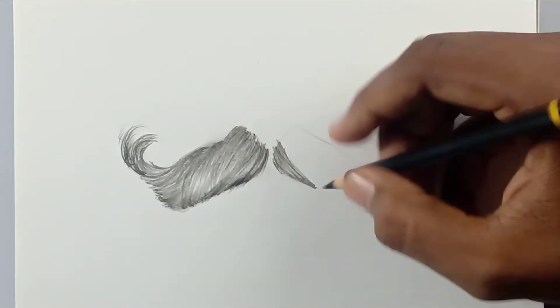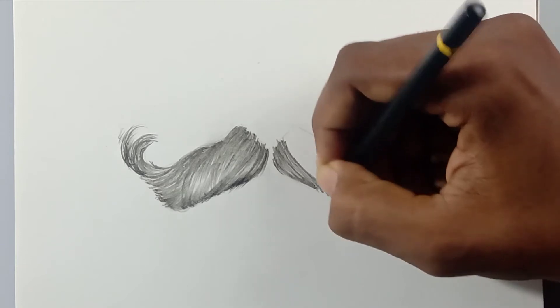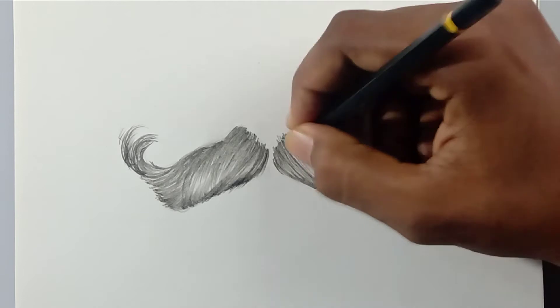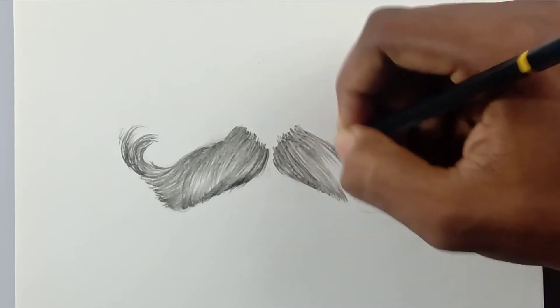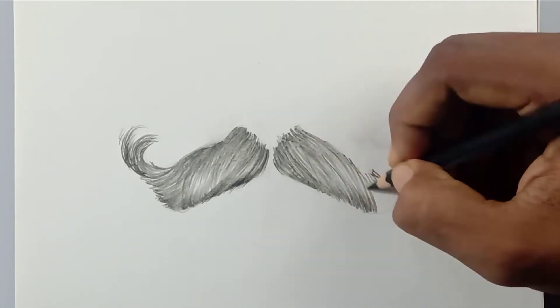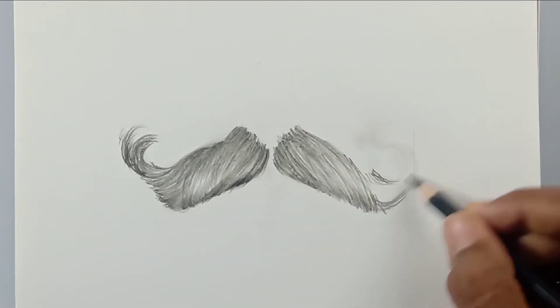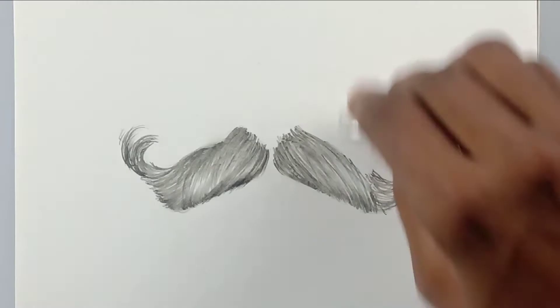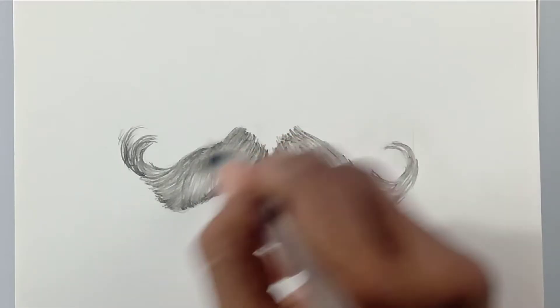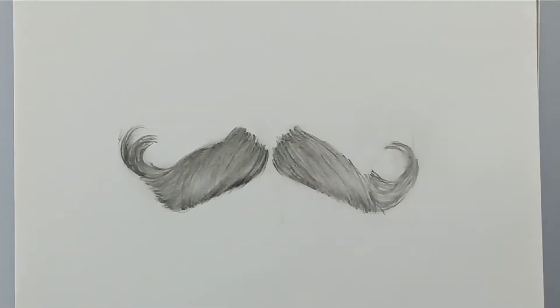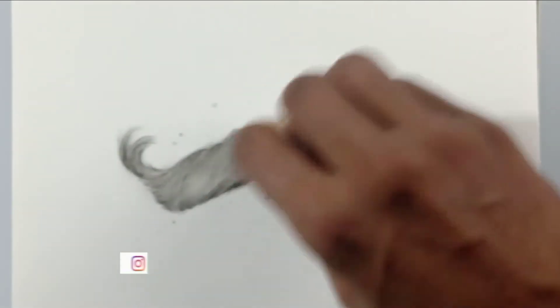Friends, I'm going to use a dry brush for blending. You can also use any other blending tool like cotton or earbuds or even paper stump. But while drawing with charcoal, I like to use brush because it takes off the excess dust, so I like it.